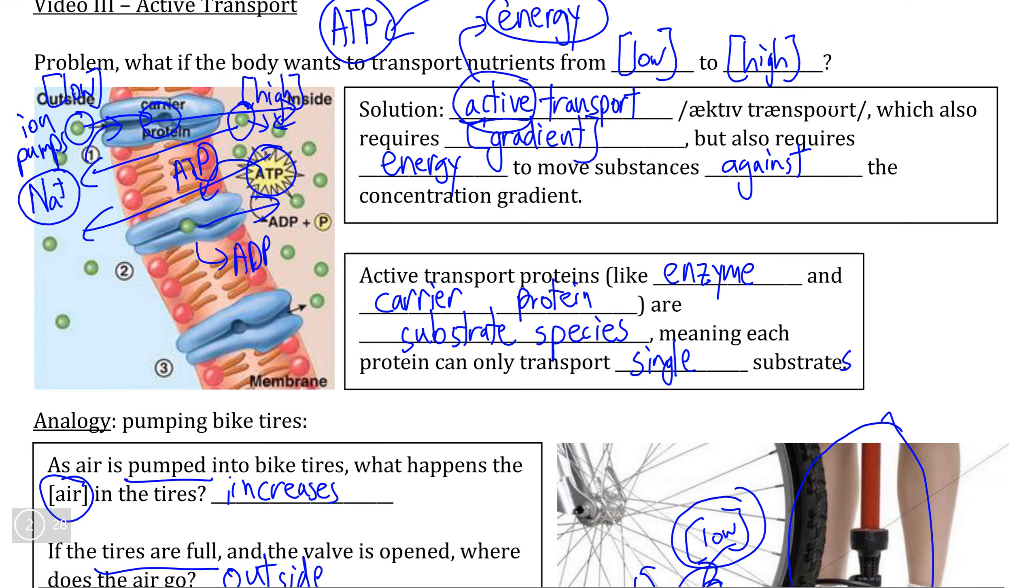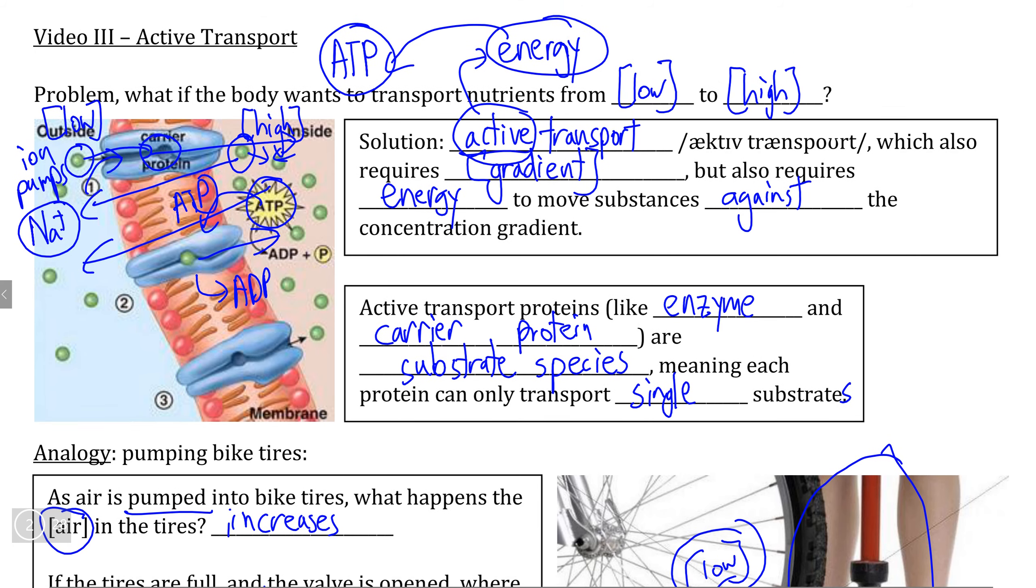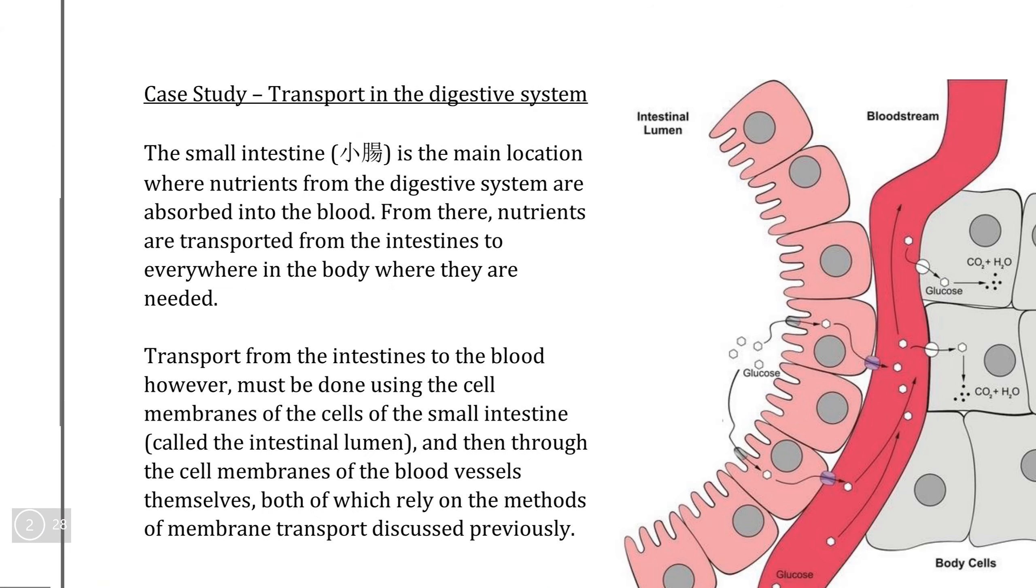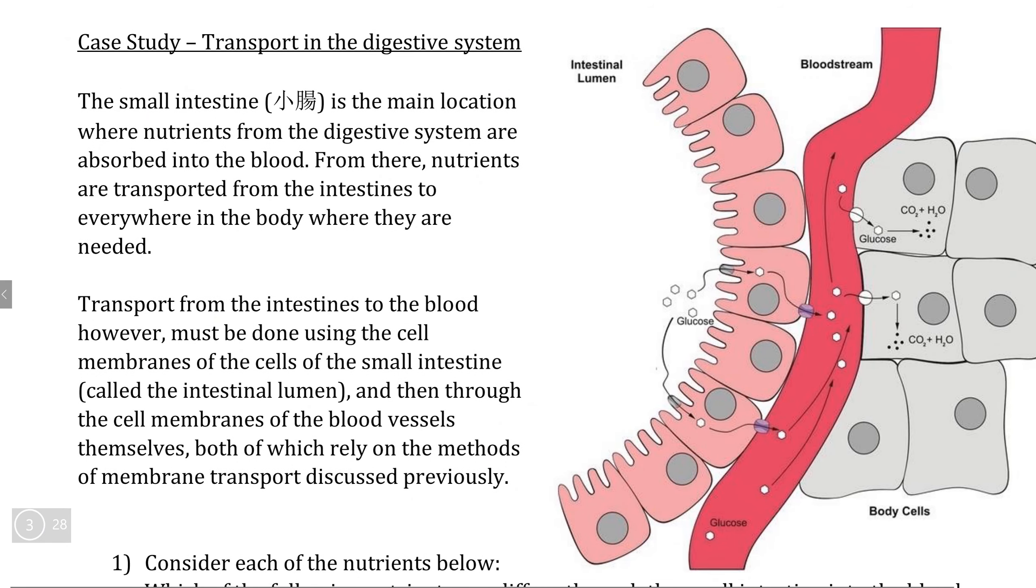Now that you have at least a surface level understanding of active transport and the difference with diffusion, see if you can take a look at this case study and answer questions about how the digestive system absorbs nutrients and transports those nutrients into the bloodstream so that your blood can transport all of the nutrients that it needs to the cells to which they are needed.